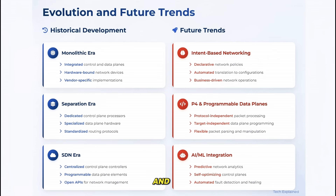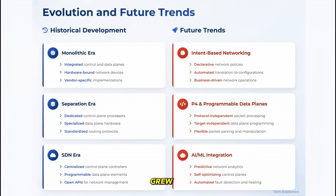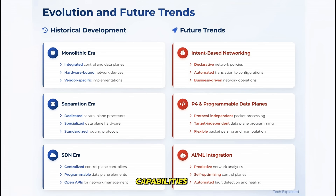The concepts of data plane and control plane have evolved significantly over time. In the early days of networking, devices were essentially monolithic — there was no clear separation between control and data functions; everything was implemented in software running on general-purpose processors. As networks grew and performance demands increased, we saw the emergence of specialized hardware for data plane functions, allowing for much higher throughput while still maintaining complex control plane capabilities in software.